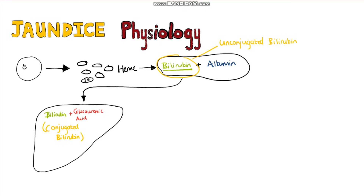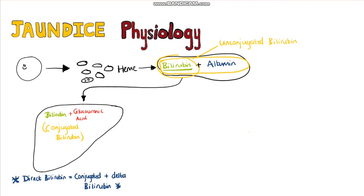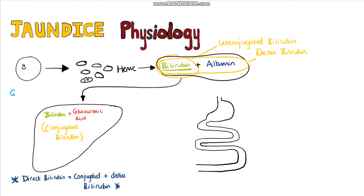This is sometimes referred to as soluble and insoluble bilirubin. Direct and indirect bilirubin are often used as equivalents to conjugated and unconjugated bilirubin. But to be technically correct, direct bilirubin includes conjugated bilirubin and delta bilirubin, which is the bilirubin bound to albumin that we mentioned earlier.